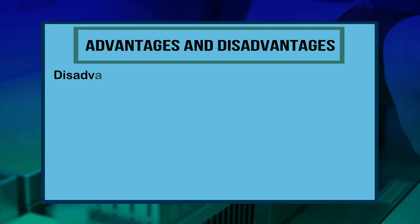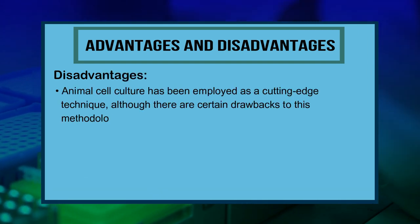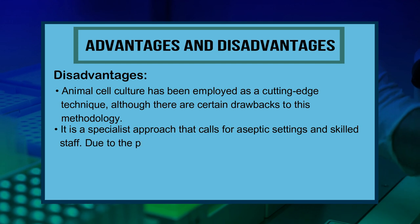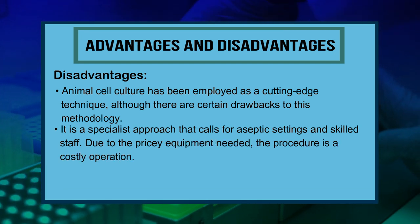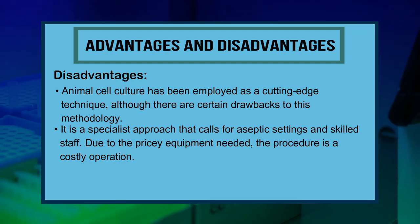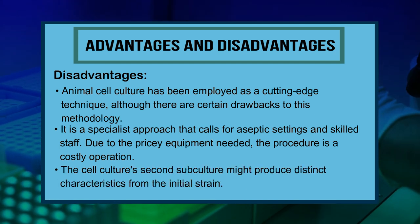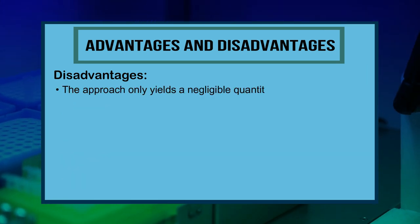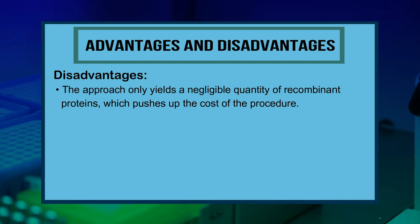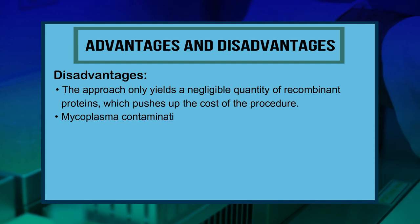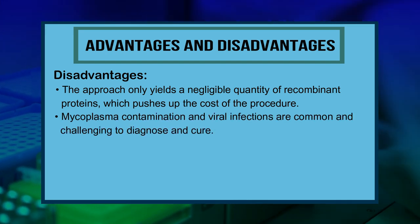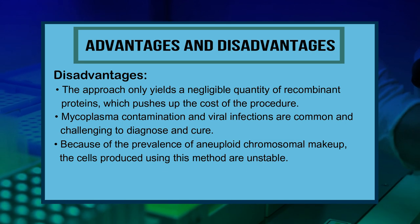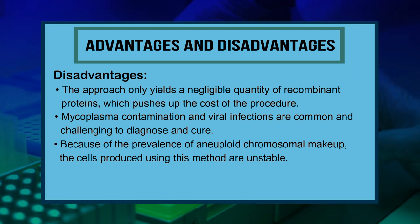Disadvantages of animal cell culture include: it is a specialist approach requiring aseptic settings and skilled staff, and the procedure is costly due to pricey equipment; the second subculture may produce distinct characteristics from the initial strain; the approach only yields a negligible quantity of recombinant proteins, pushing up costs; mycoplasma contamination and viral infections are common and challenging to diagnose and cure; and because of the prevalence of aneuploid chromosomal makeup, the cells produced are unstable.